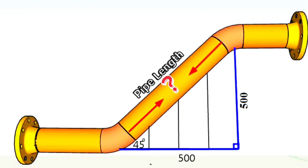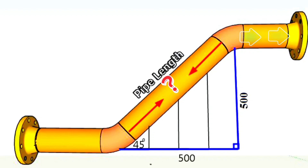As you can see, the horizontal part of the pipeline goes up here using a 45-degree elbow, and at this point it goes back to horizontal again using a 45-degree elbow. First, let's calculate the distance from the center of one elbow to the center of the other elbow.